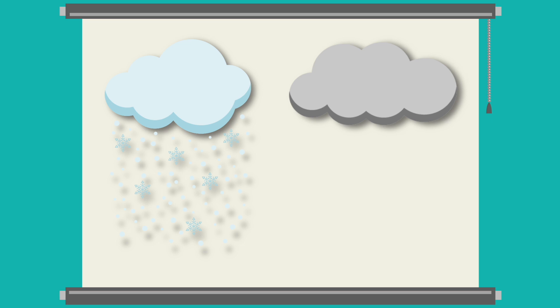Hail forms when there's a big storm and super strong winds. Water droplets get tossed up and down inside the storm cloud, freezing and turning into balls of ice. And hail can happen when the temperature closer to the ground is warmer, but snow can't.